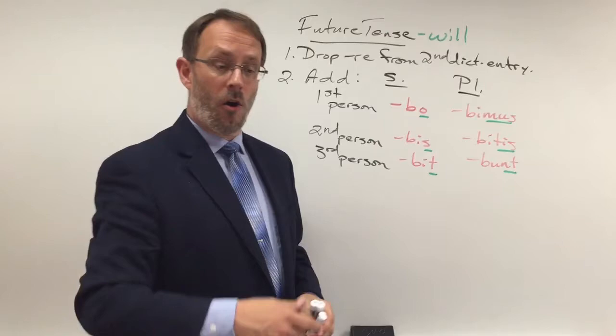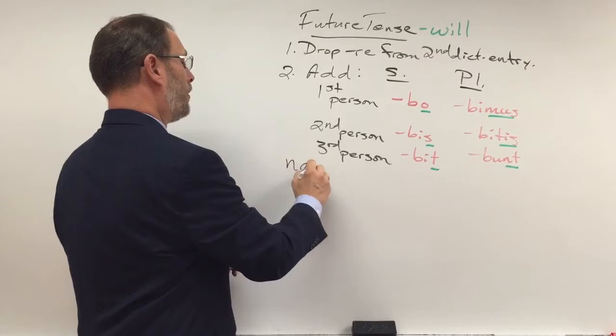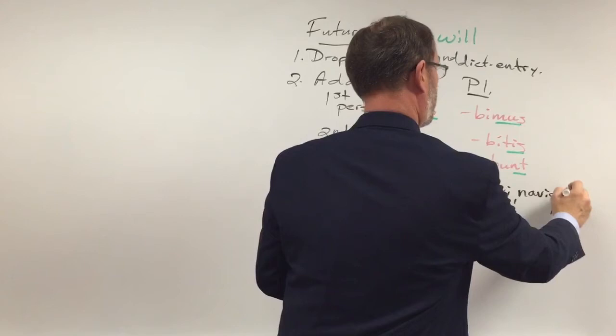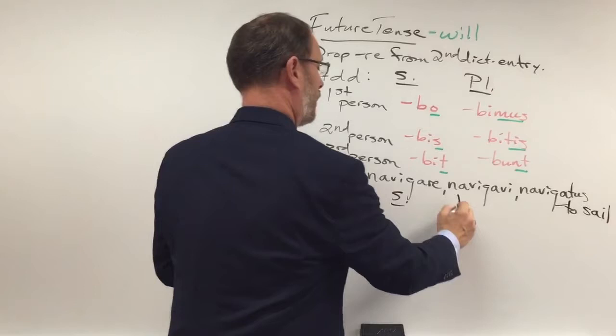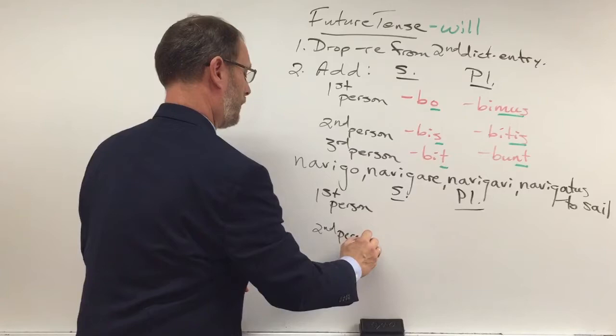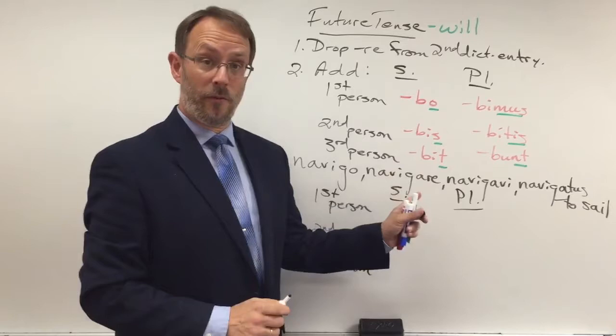Alright, let's try one of the new verbs. This is from page 53. Try the new verb: navigo, navigare, navigawi, navigatus — to sail. I'll set the chart up for us. You might want to leave a couple lines in between — first person, skip a couple lines, second person, skip a couple lines, third person — and see if you can conjugate that verb in the future tense in both Latin and English. Hit pause on the video and give it a try.